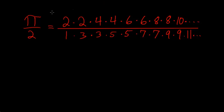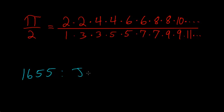This formula for pi was first discovered by the English mathematician John Wallis in the year 1655.